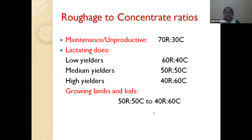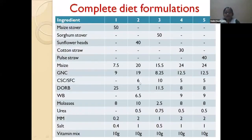Different diet formulations have been studied with various crop residues. If you include 50% maize stover, the remaining ingredients are concentrated: maize 7.5 kg, groundnut cake 9 kg, de-oiled rice bran 25 kg — per 100 kg batch. If molasses is available, it can be included or replaced with maize. Mineral mixture: 0.2 kg; salt: 0.4 kg; and vitamin mixture should also be added.